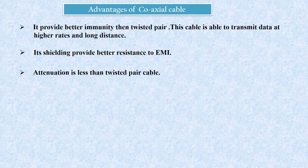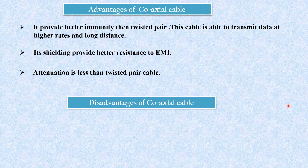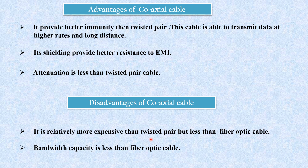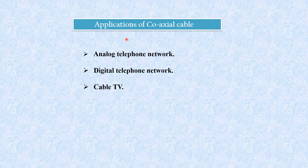Advantages of coaxial cable: it provides better immunity than twisted pair, is able to transmit data at higher rates and over longer distances because it is shielded, and its shielding provides better resistance to electromagnetic interference. Attenuation is less than twisted pair cable because it is shielded by an outer conductor. Disadvantages: relatively more expensive than twisted pair but less than fiber optics; bandwidth capacity is less than fiber optics. Applications: used in analog telephone networks, digital telephone networks, and cable TV.